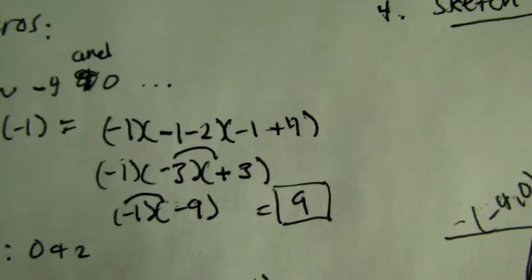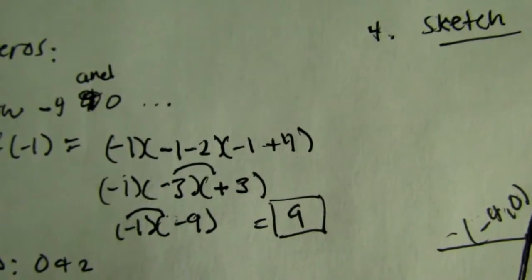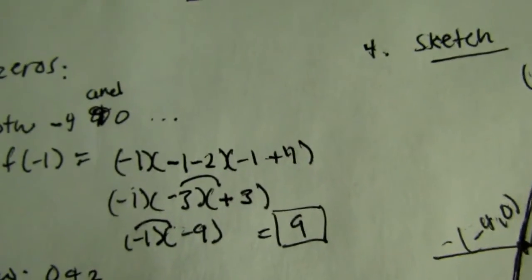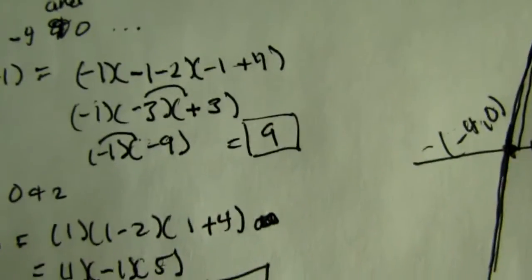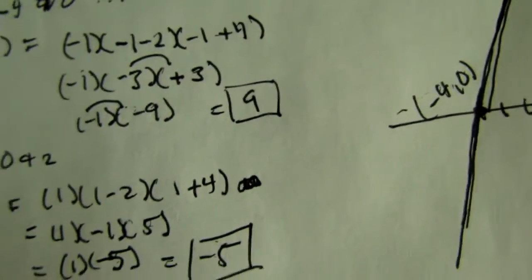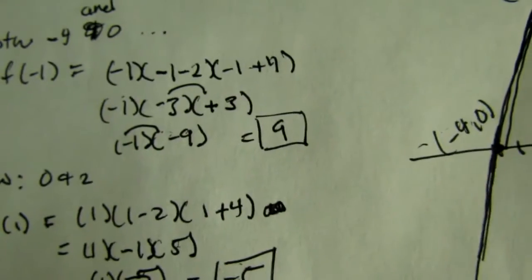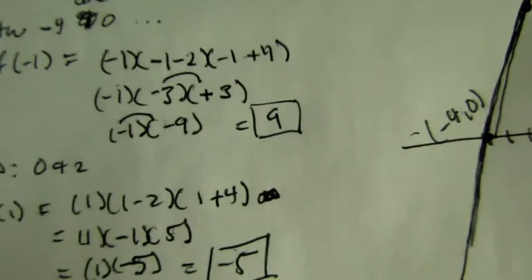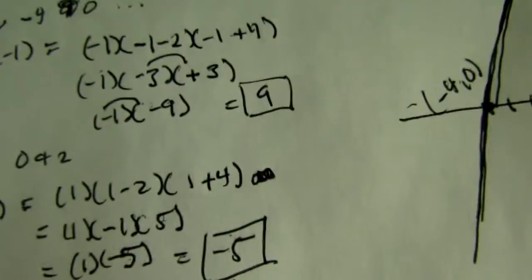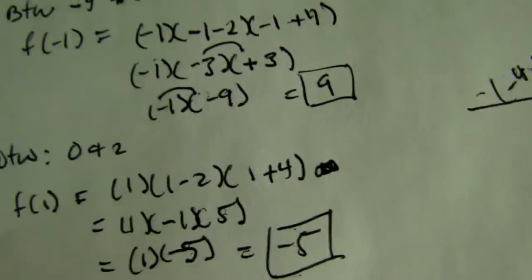So, we get negative 1 times (negative 1 minus 2) times (negative 1 plus 4), and we get negative 1 times negative 3 times 3. And we get negative 1 times negative 9, and a negative times negative is a positive, and we get 9.